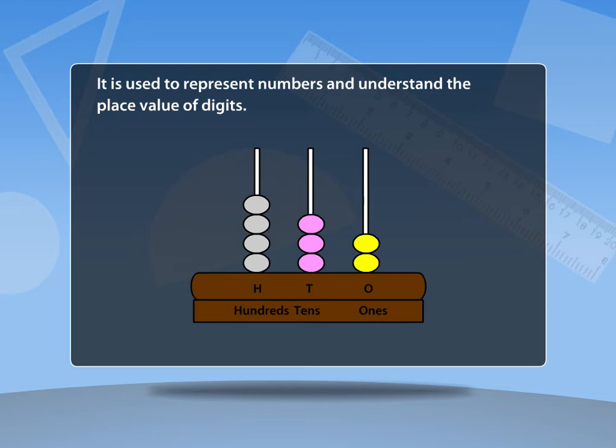In the given picture of the abacus there are three rods. In the first rod there are two beads, next to it there are three beads, and in the third rod there are four beads. Therefore this abacus represents a three digit number, that is 432.